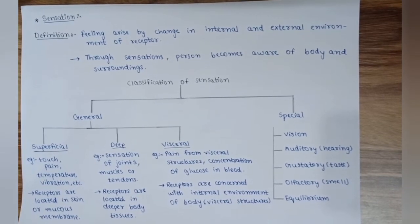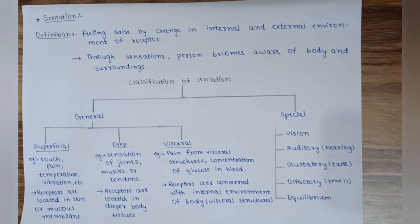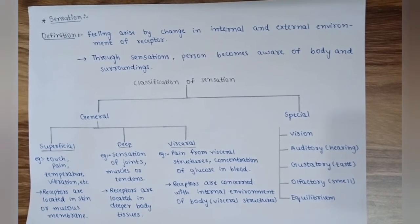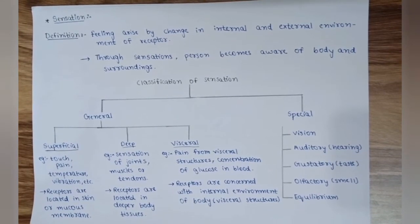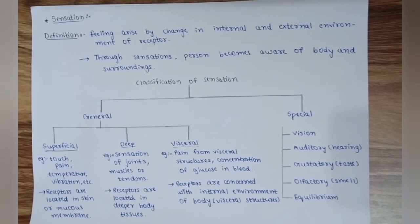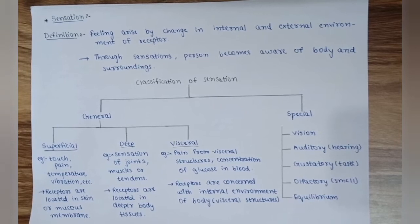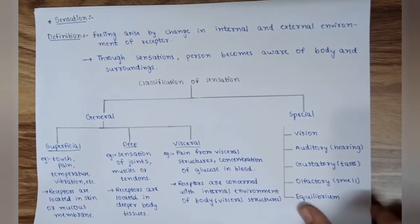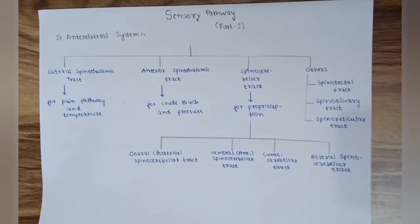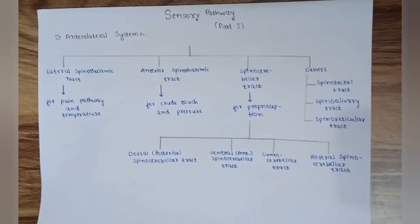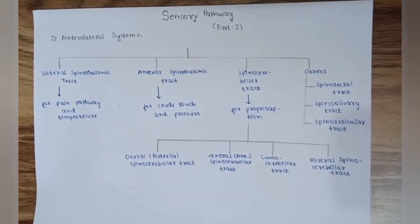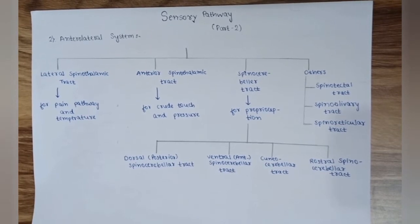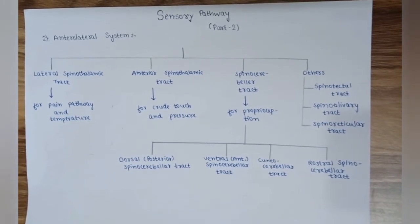Special sensation includes vision, auditory (hearing), gustatory, olfactory (smell), and equilibrium. Now let's start our sensory pathway Part 2. The topic is the anterolateral system, which is divided into four types.